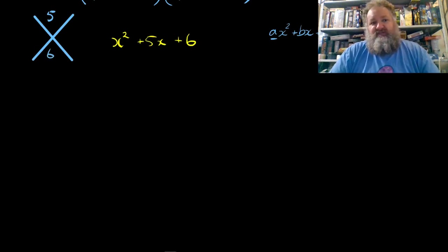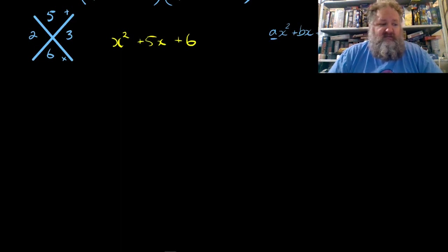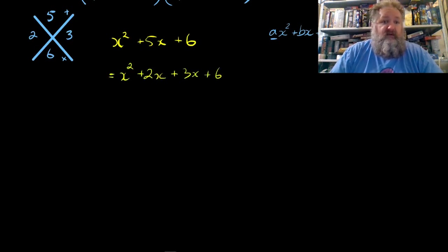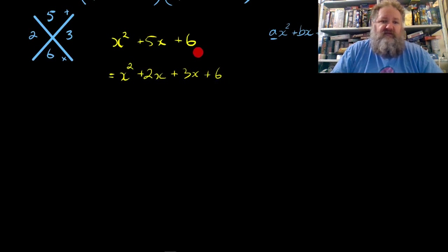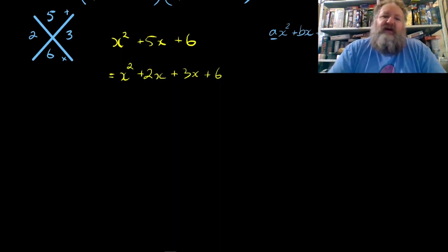We need two numbers that add to give 5 and multiply to give 6. Those numbers are 2 and 3. Now we rewrite the trinomial as a four-term polynomial: x² + 2x + 3x + 6. We no longer have a trinomial — we have four terms, a polynomial.